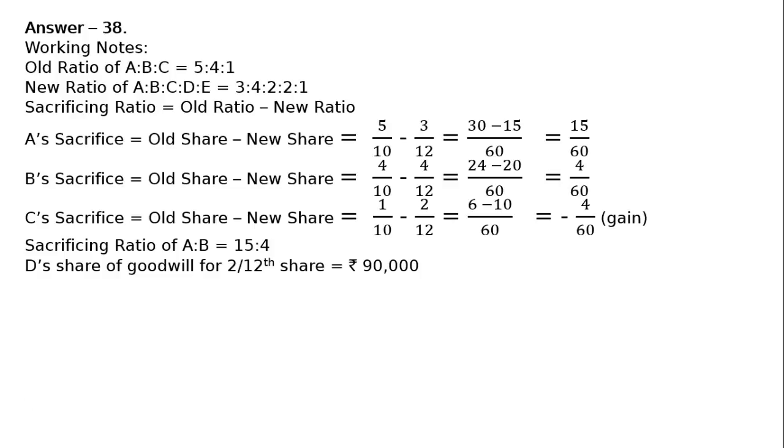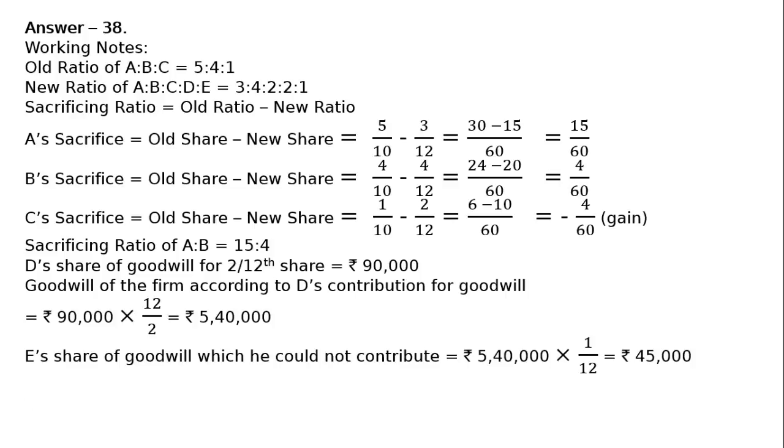Hence, goodwill of the firm according to D's contribution will be Rs. 90,000 multiplied by 12/2, that is Rs. 5,40,000. This is the valuation for goodwill for the whole firm, and 1/12 is his new share. Hence, each share of goodwill premium is Rs. 45,000, which E could not contribute for goodwill.